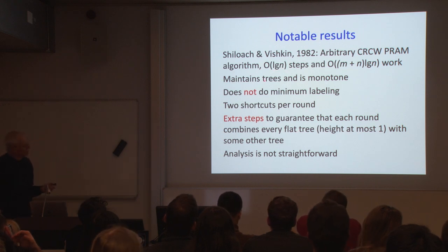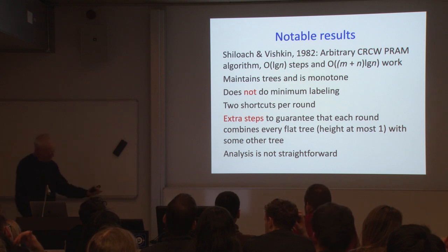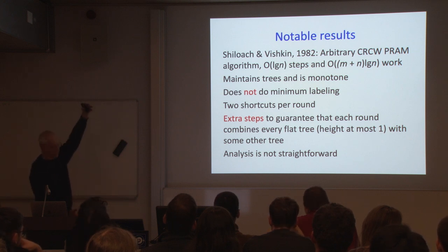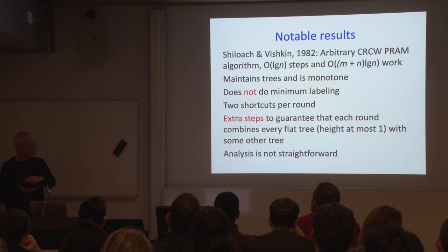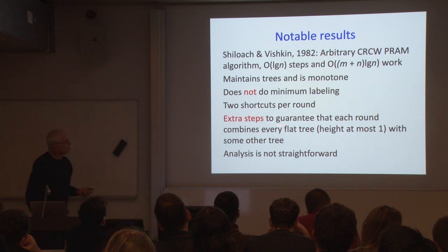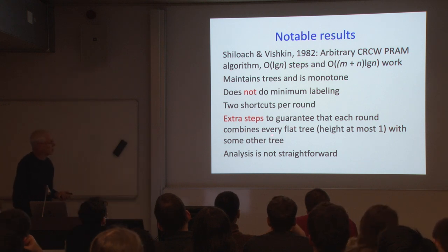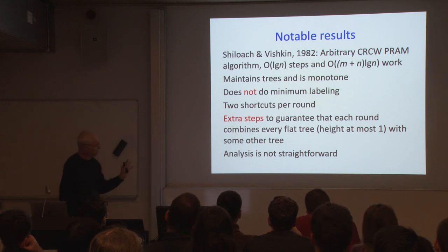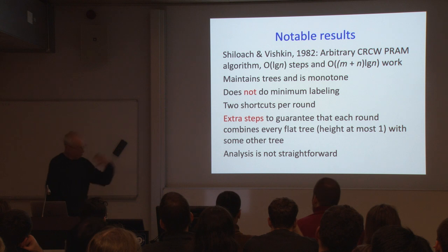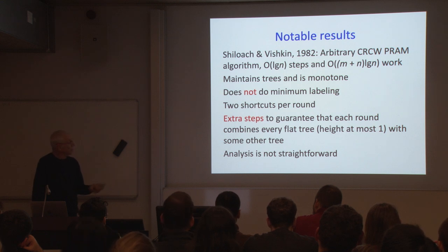All these algorithms combine some kind of shortcutting strategy with some kind of tree-combination strategy. If you combine trees arbitrarily, you can build up long paths that then have to get flattened. One issue is that flat trees that are already flattened may take some time to connect to another tree — this poses a problem for the analysis. Their algorithm is complicated specifically to ensure that every flattened tree sitting idle for a round gets combined with some other tree, so the number of trees decreases by a constant factor — part of proving the log n bound.